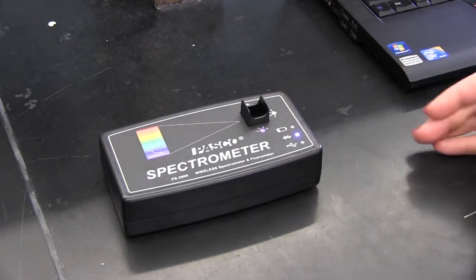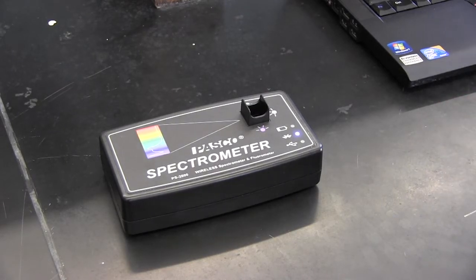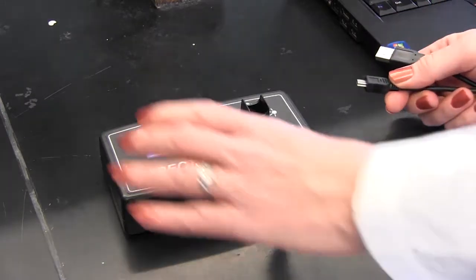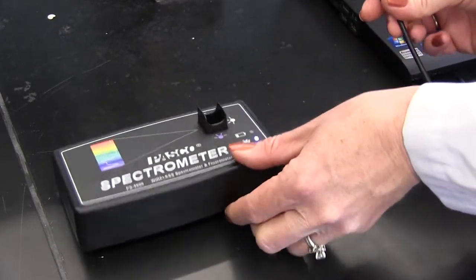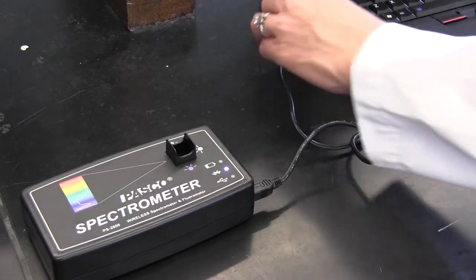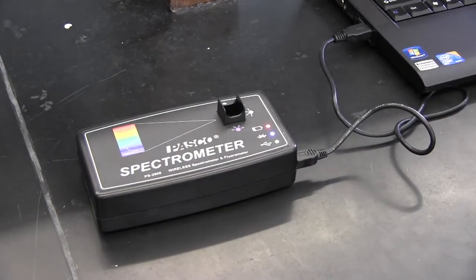So now the spectrometer is on and if you are going to be using it with a computer, you will connect it to your computer using a USB cable. So you plug it in there and you'll also plug it into your computer and your computer will automatically install the device software.